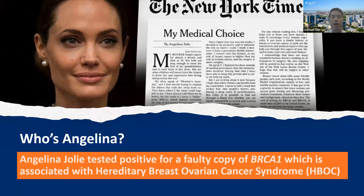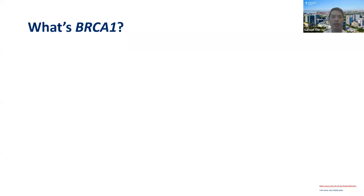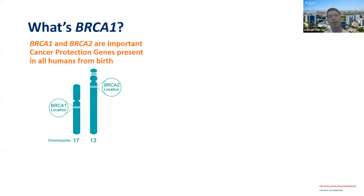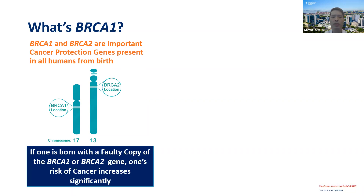Her mother had both breast and ovarian cancer — two not-so-common events coming into one. The males in her family were not spared either, with her maternal grandfather having salivary gland cancer and her maternal uncle having prostate cancer. This family history is pretty telling — something is just wrong. She told the world that she tested positive for a faulty copy of the BRCA1 gene, which is associated with hereditary breast ovarian cancer syndrome, or HBOC. BRCA1 and BRCA2 are important cancer protection genes present in all humans from birth, present on different chromosomes, and they are inherited.